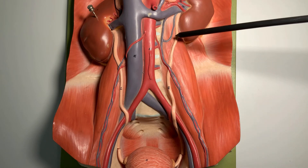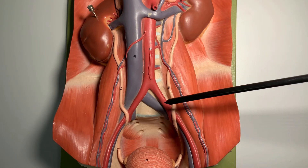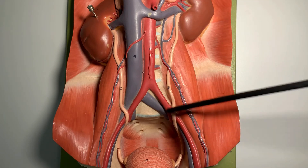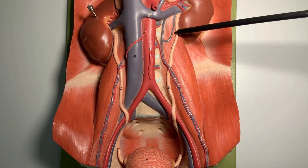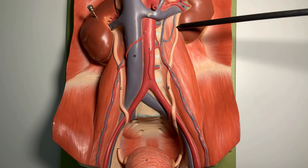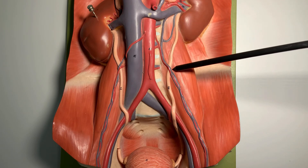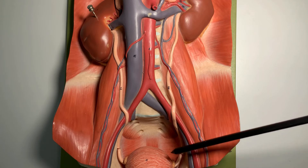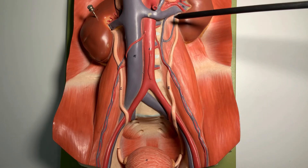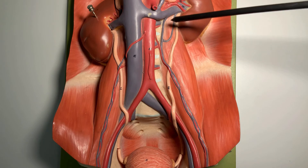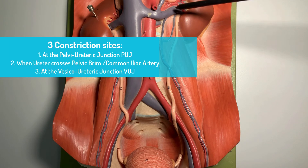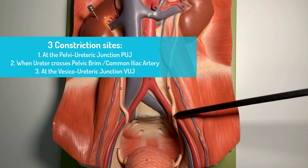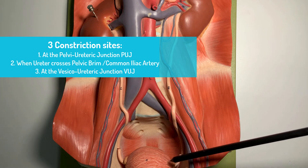When learning about constrictions there are some other sites as well, but these three are must-know. Our ureters also encounter vessels at three locations, which we will cover in another slide. For example, the ureter is crossed by the gonadal vessels, and in the pelvic region in the female the ureter is crossed by the uterine artery. The three normal constriction sites are: number one, pelvi-ureteric junction; number two, pelvic brim; and number three, vesico-ureteric junction.